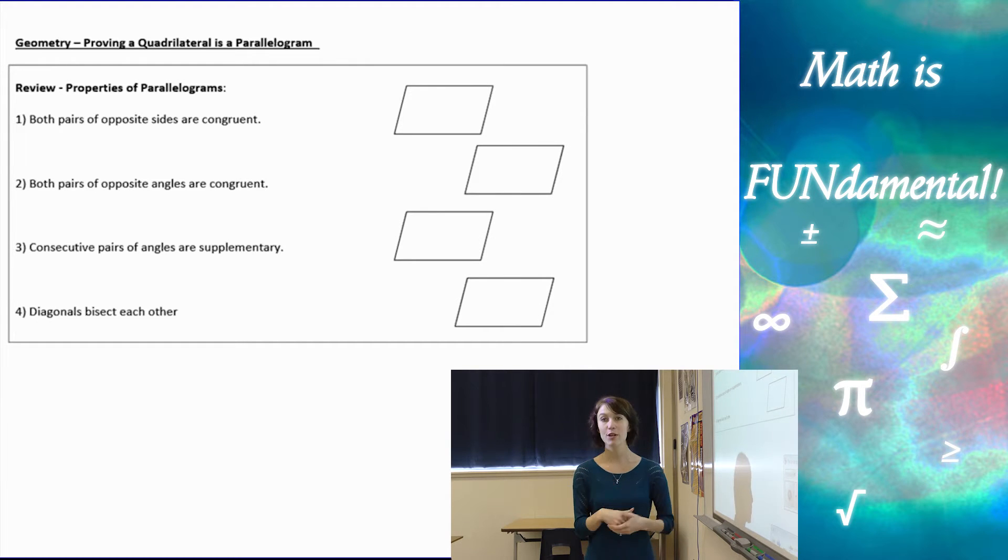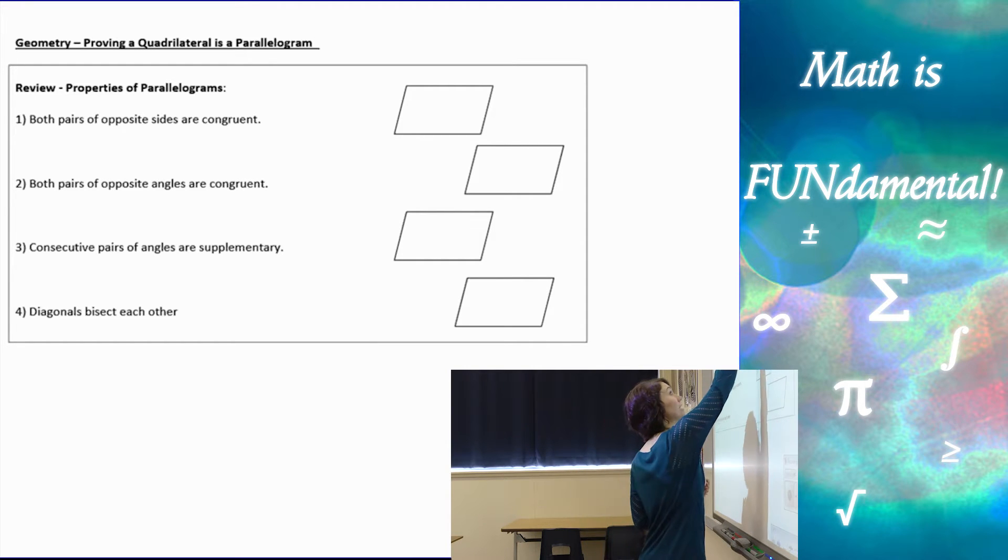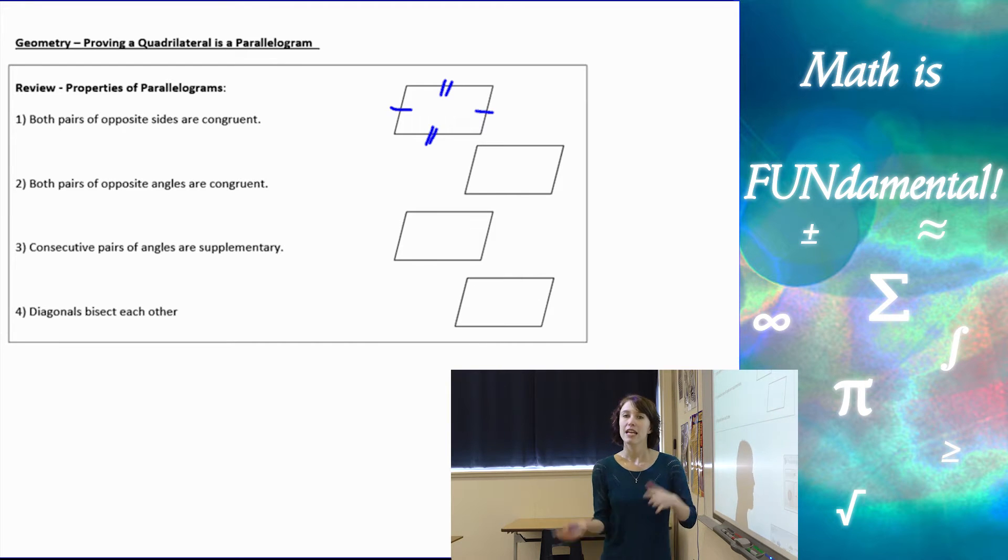We're going to start with a little review on properties of parallelograms. The first property is that both pairs of opposite sides are congruent. I'm just quickly going to mark these on my diagram. In the last video we covered these more in depth. The next property is that both pairs of opposite angles are congruent.